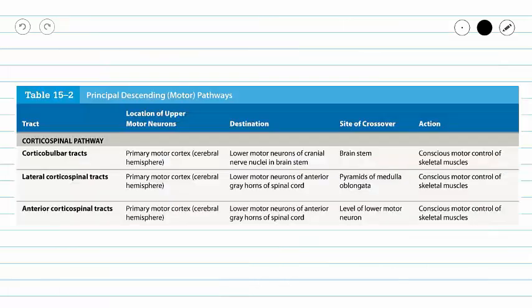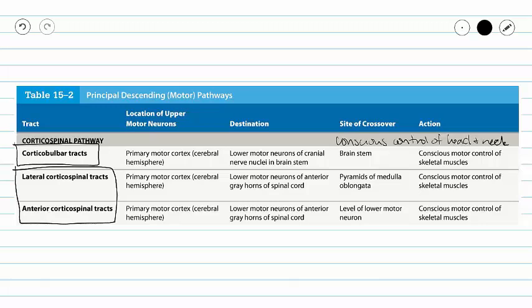Here again we have a nice table summarizing what's going on. We just talked about our anterior and lateral corticospinal tracts, which control our limbs, but our corticobulbar tracts follow the same pathway except they do muscle control of the head and neck through our cranial nerves. So if you ever see corticobulbar tracts, think cranial nerves. Our corticospinal tracts are going to do our skeletal muscles. If you have any questions, never hesitate to contact your instructor.